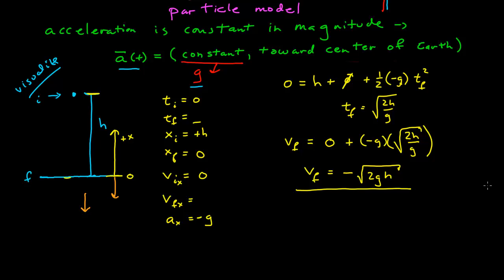I ask myself: does that make sense? It's negative, and so when it hits the ground it's going to be moving down, which is the negative x-direction. So the negative makes sense. The stronger the acceleration, the faster it goes; drop it from a higher height and it will be going faster when it hits the ground. These all make sense, and the negative sign is the right direction.